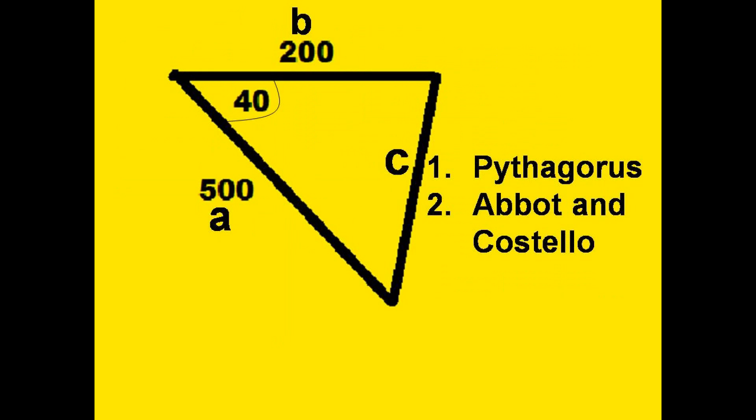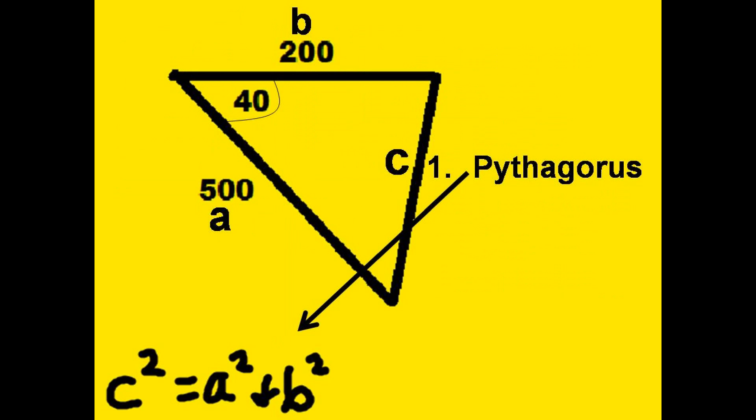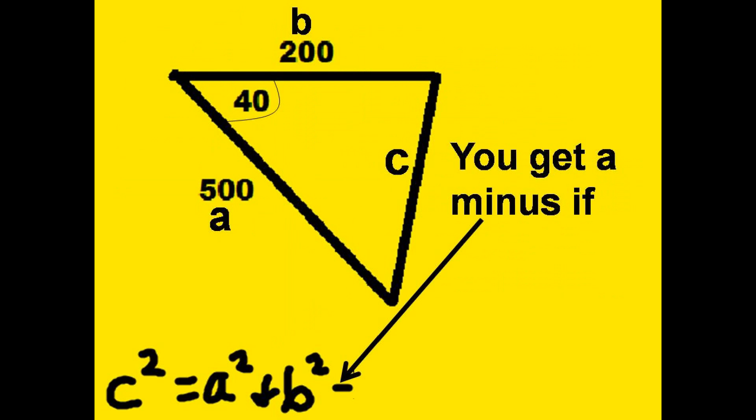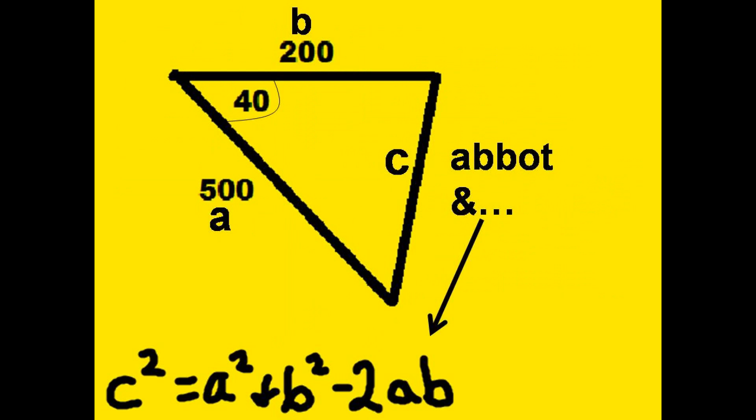Pythagoras and a comedy team named Abbott and Costello. Pythagoras we know is a squared plus b squared equals c squared. But you're gonna get a minus if you forget these two: Abbott and Costello.